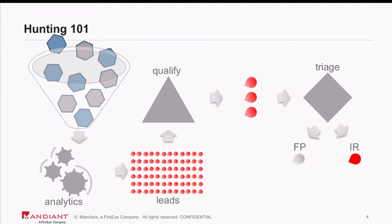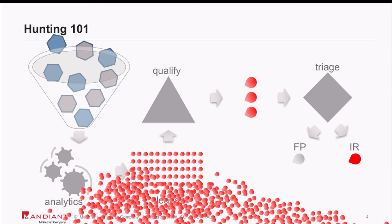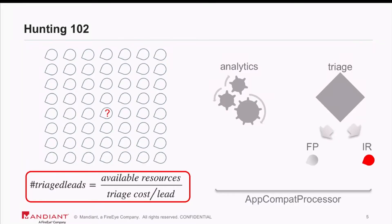The truth when you start doing this thing for real is it's a bit of a mess. The problem is you can't triage all the leads you can generate, and you don't know which of the leads is going to be the one that takes you to the attacker. How many leads can you triage? It depends on your budget — whether that's people or hours per week, at the end of the day it's going to be dollars. And you're triaging cost per lead. That is the topic I want to highlight today.